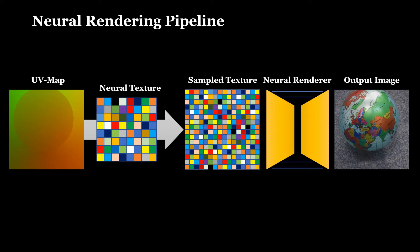Our pipeline consists of learnable neural textures and a learnable renderer. Instead of classical textures, our neural textures contain learned features that are interpreted by the rendering network. We use the UV maps from the rasterizer to sample from these neural textures. A small unit is used to translate these features to color values. This pipeline can be trained end-to-end, given ground truth pairs of UV and color maps from the original object video.